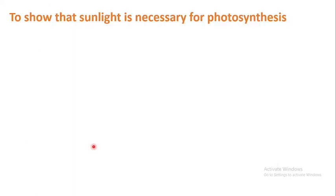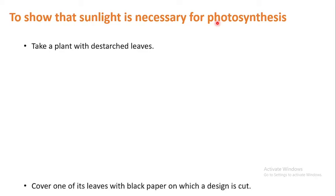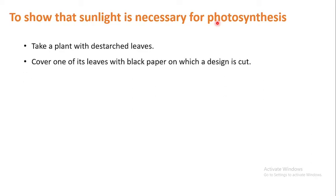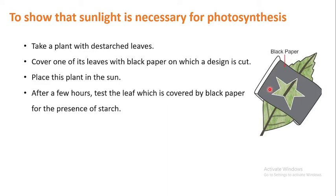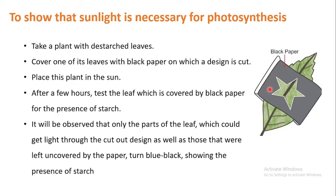The next experiment is to show that sunlight is necessary for photosynthesis. Take a destarched plant and cover one of its leaves with black paper on which a design — such as a star — is cut out. Stick the black paper to the leaf and place the plant in the sun. After a few hours, pluck the covered leaf and test it for the presence of starch.